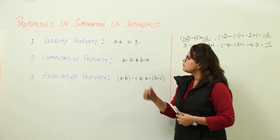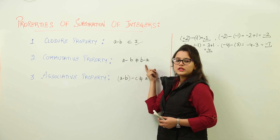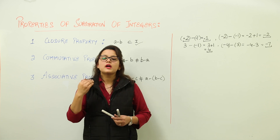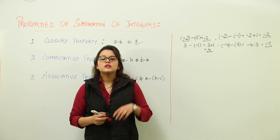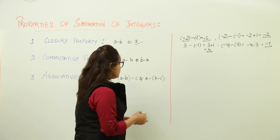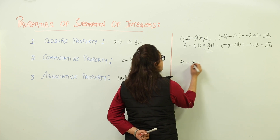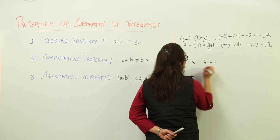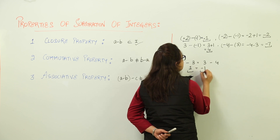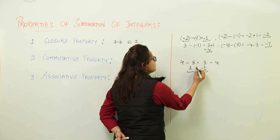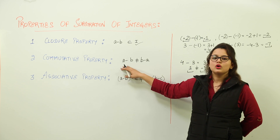The next is the commutative property. For commutative property, the subtraction of integers is not commutative. That means if you subtract one integer from the other, it will not give you the same result as subtracting the other integer from the previous one. Let us take an example: 4 minus 3 and on the other side 3 minus 4. What is 4 minus 3? It is 1. What is 3 minus 4? It is minus 1. We can clearly see that the answers are not equal, giving us the conclusion that the subtraction of integers is not commutative.